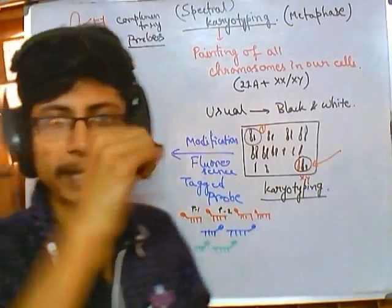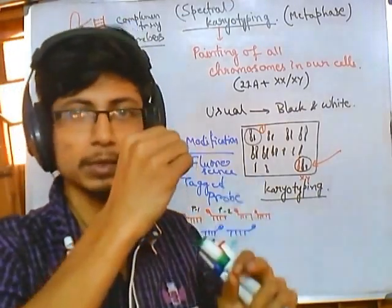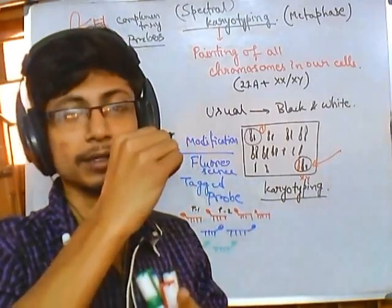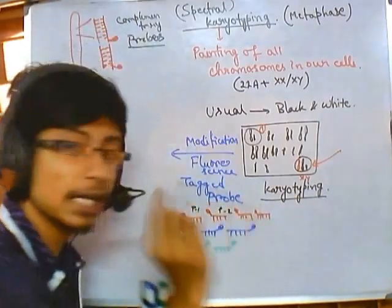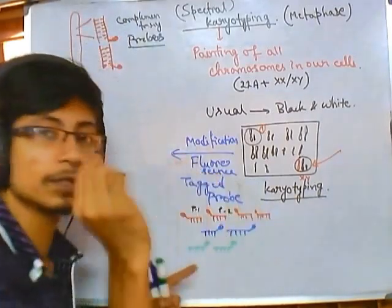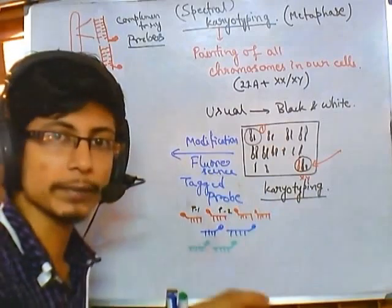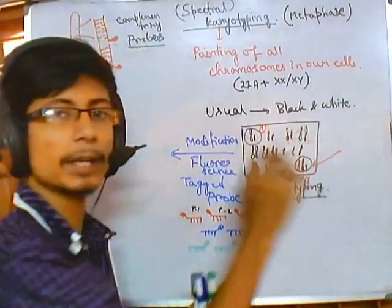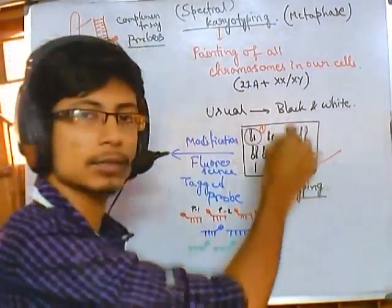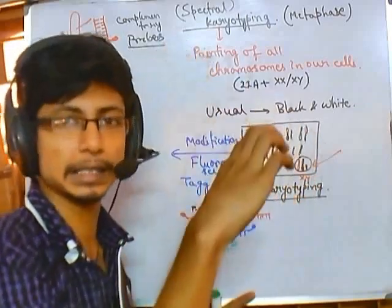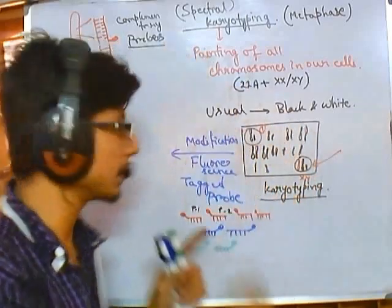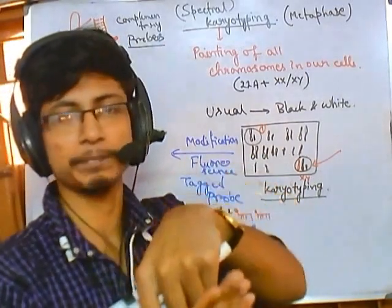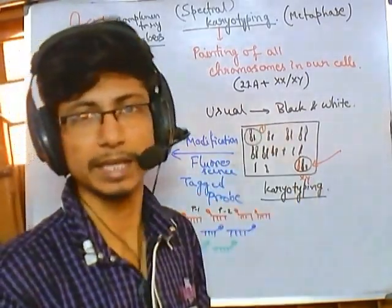By providing different colors through different probes and different fluorescence tags, we ensure that we know which chromosome we are looking at. By looking at normal black-and-white karyotyping, we can only tell chromosomes apart depending on their length and structure. But with spectral karyotyping, just by looking at the color we can tell which chromosome is which. Similarly, we provide blue-colored probes to bind only with chromosome number two, so all genes on chromosome two are tagged with blue fluorescent dye.